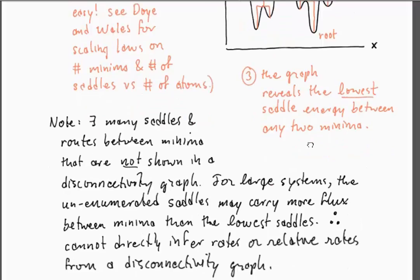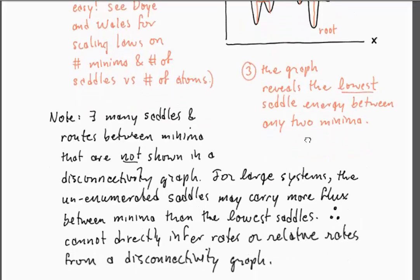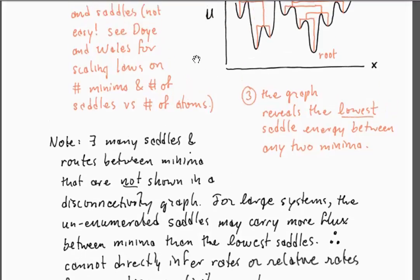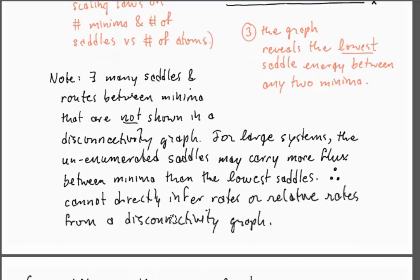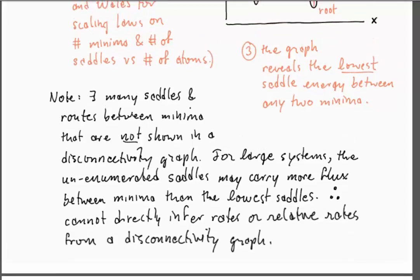That has to be said with some caution. This disconnectivity graph actually only shows the lowest energy saddle point between two structures. If there are lots and lots of saddle points, and we know from Doye and Wales that there are, then we can't directly infer rates or even relative rates by just looking at the disconnectivity graph. Those numerous saddle points just higher than the energy of the ones that are shown might actually change those relative rates. And I think that's where I will stop.